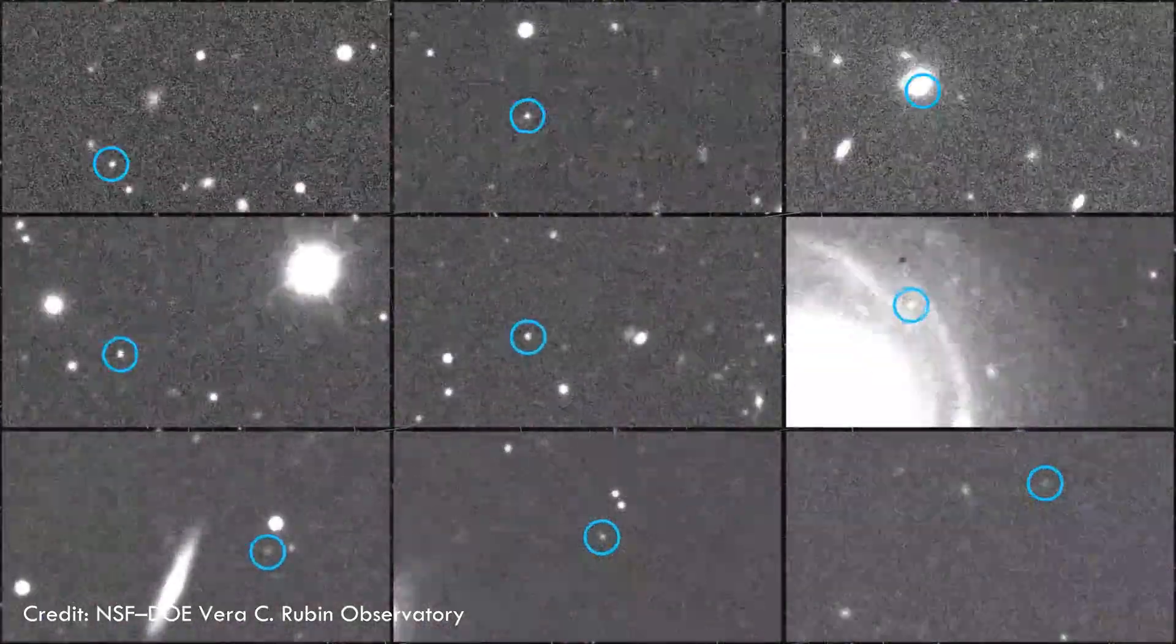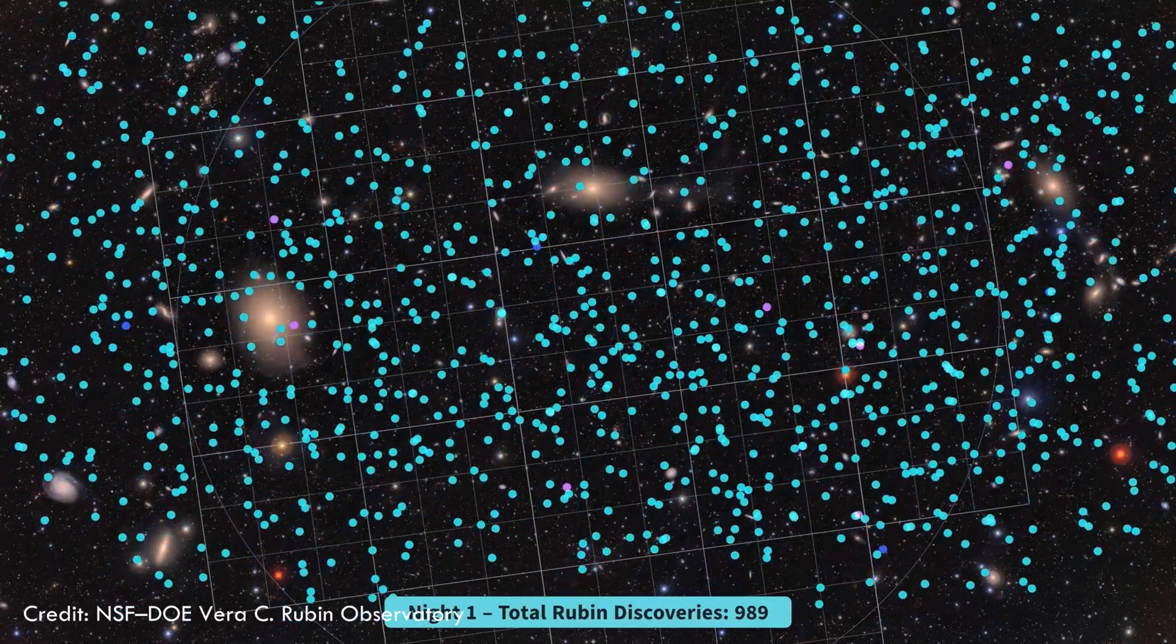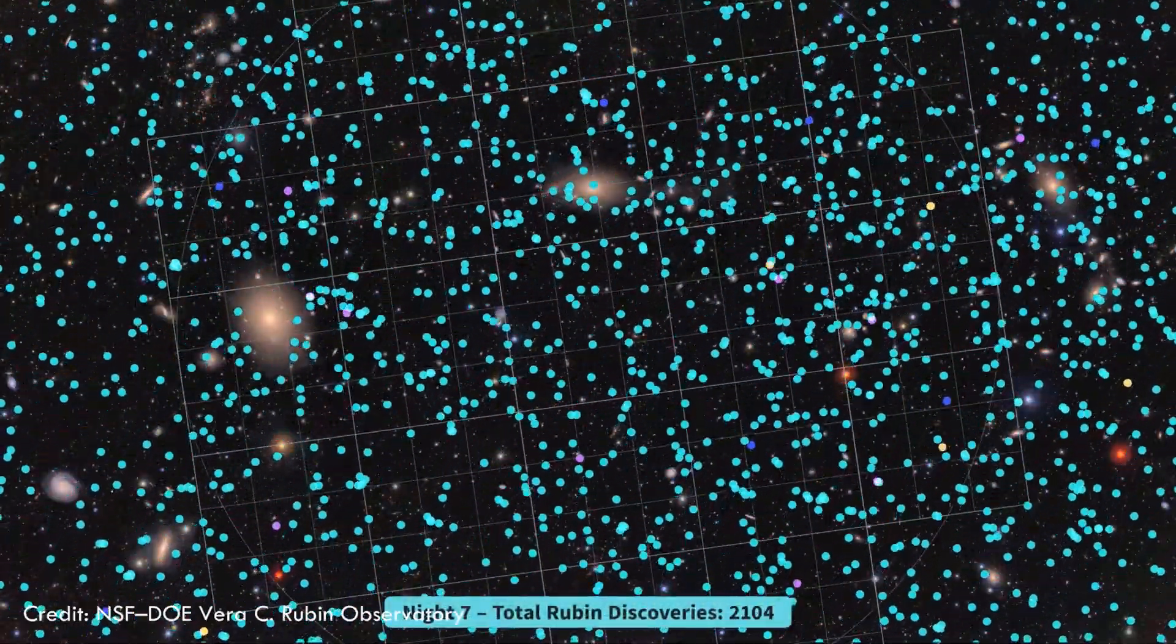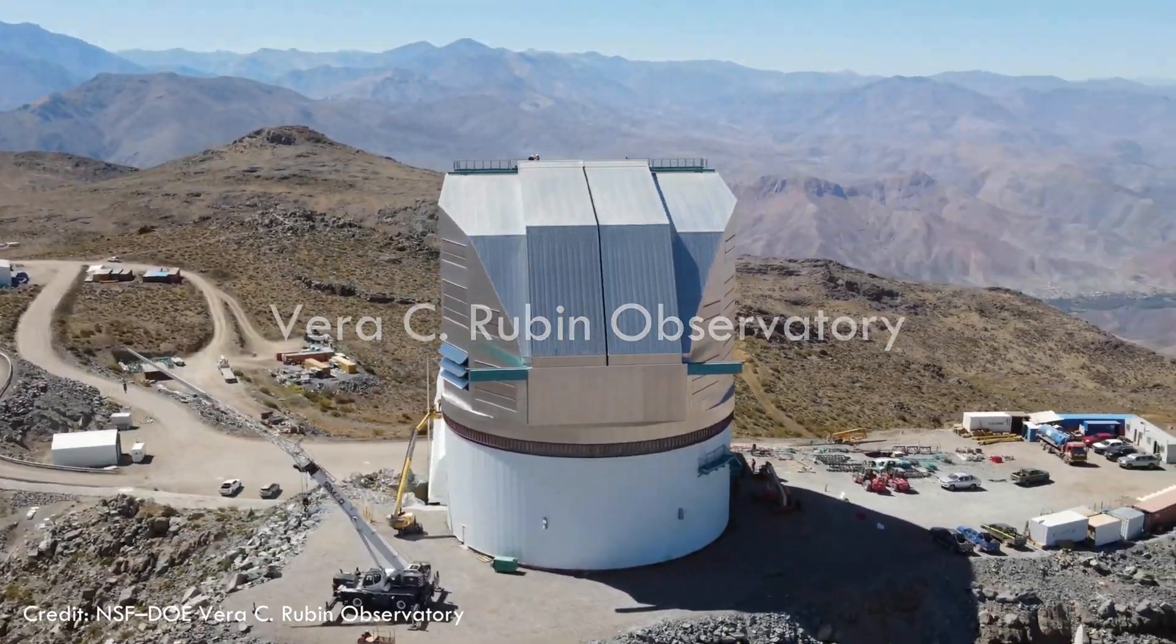We recently found not tens, not hundreds, but 2,104 never-before-seen asteroids in our solar system, including 7 near-Earth asteroids in just 7 nights of observations of a very small patch of the sky using the new Vera Rubin Observatory.